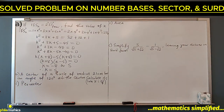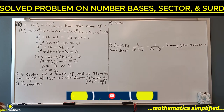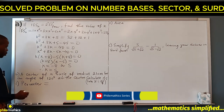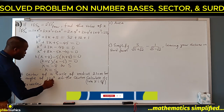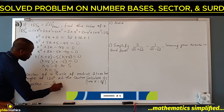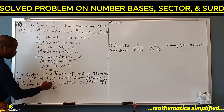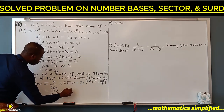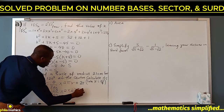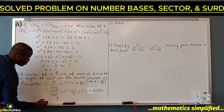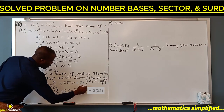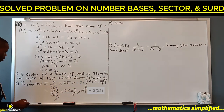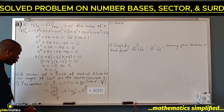Part b: a sector of a circle of radius 21 cm has an angle of 120 degrees at the center. Calculate its perimeter. The arc length formula is theta over 360 times 2πr. With theta as 120 over 360, times 2 times 22 over 7, times radius 21. Simplifying: 120 and 360 cancel to give one third, and 3 and 21 cancel to give 7, leaving 2 times 22, which is 44 cm.